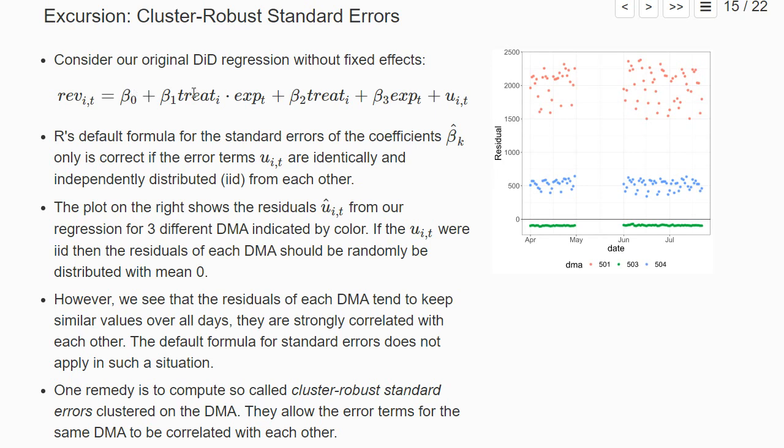Consider again our original difference-in-differences regression specification without the fixed effects. R's default formula for the standard errors of the coefficients is only correct if the error terms are all identically and independently distributed from each other.